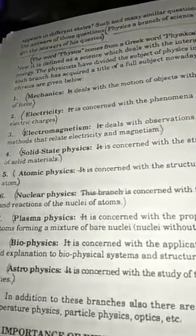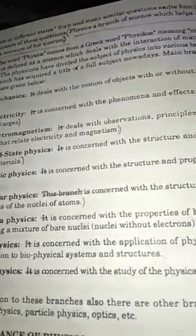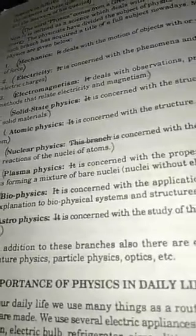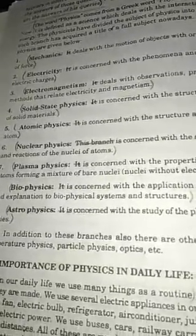Electromagnetism, ismein ye woh branch hai physics ki. Jis mein hum deal karte hai relationship between electricity and magnetism. Yani electricity aur magnetism ke under ke darmiyan jo relationship hai, jo interaction hai, uski study ko hum electromagnetism mein study karte hai.